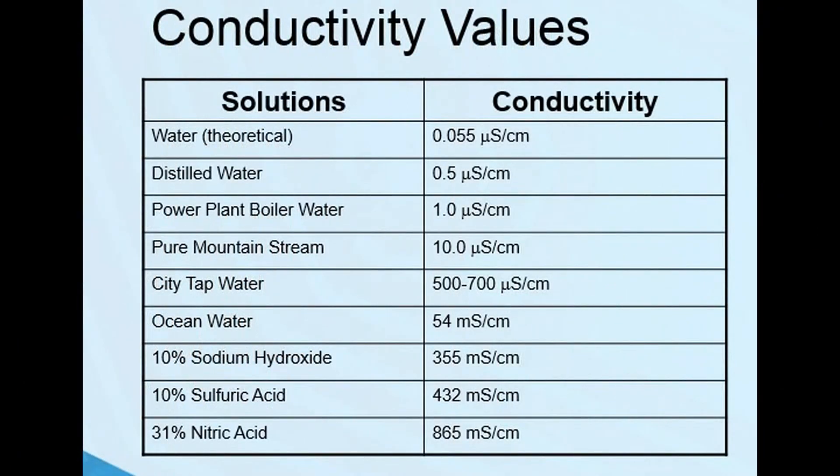This is a table of the conductivity of water. And then once again, theoretically water does not conduct electricity, but as they increase the amount of impurities in the water, then of course the conductivity will change. Of special interest is the pure mountain stream. Pure mountain stream water might taste good because it has minerals suspended in it, and so it gives it a good taste, but it also increases the conductivity. And then of course, you add acids into the water and the conductivity goes up greatly.